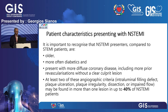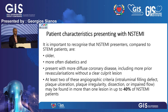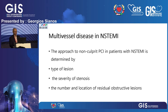Compared to STEMI, where most of the time we can clearly recognize the culprit vessel, patients with NSTEMI tend to be older, more often diabetic, and present with more diffuse coronary artery disease including prior revascularization without a clear culprit lesion. At least two angiographic criteria — such as intraluminal filling defect, plaque ulceration, plaque irregularity, dissection, or impaired flow — may be found in more than one lesion in up to 40% of STEMI patients.